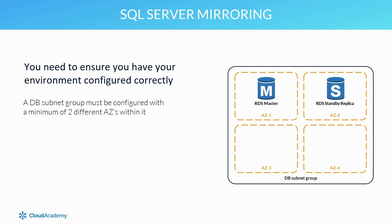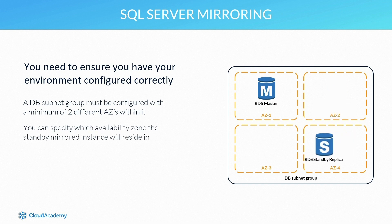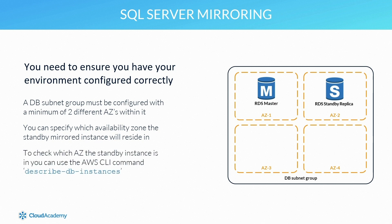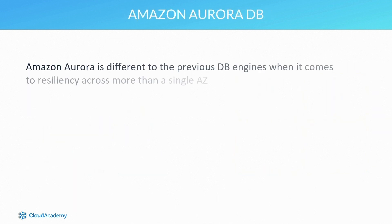This DB subnet must then be associated to the SQL Server that is going to be mirrored. It's worth noting that you can specify which availability zone the standby mirror instance will reside in. It's always good practice to architect your application across multiple AZs. To check which AZ the standby instance is in once you have enabled mirroring, you can use the console or the AWS CLI command `describe-db-instances`.